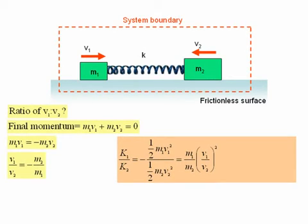k1 over k2 is just equal to half m1 v1 squared over half m2 v2 squared, which is equal to m1 over m2 times v1 over v2 all squared, which is equal to m1 over m2.